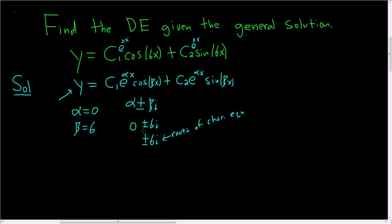So now we can go ahead and write down the characteristic equation. We know that 6i and minus 6i are roots. That means that m minus 6i and m minus negative 6i are factors of the characteristic equation.